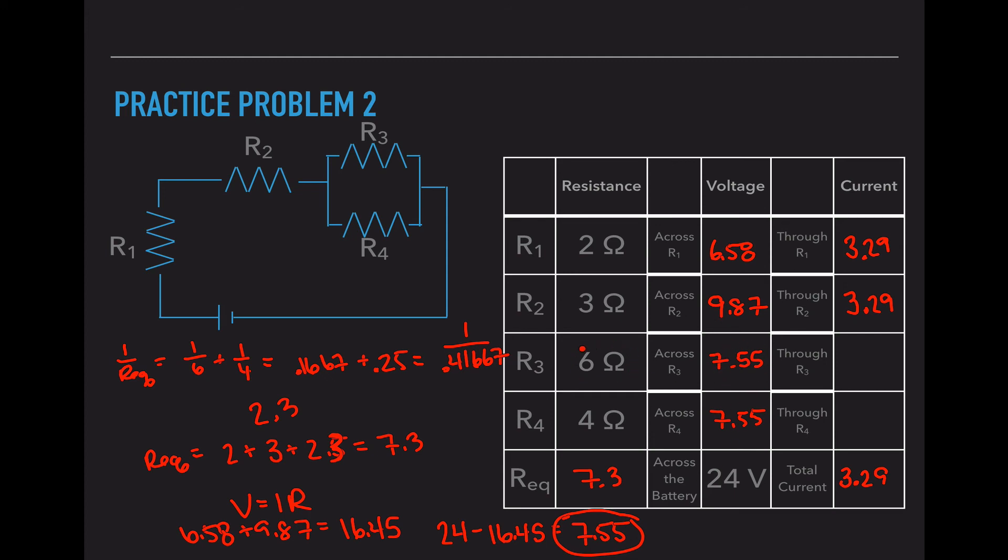7.55 divided by 6 is 1.26. 7.55 divided by 4 is 1.89. And to double check, I'm going to add these up, and I get 3.15. So that's a rounding difference from that 3.29 because I did round some decimal places.